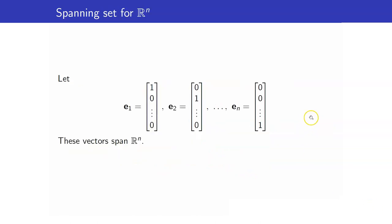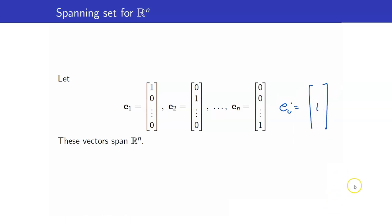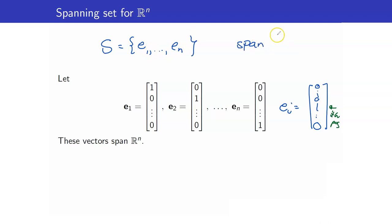Let us take a look at some examples of spanning sets. Let us consider the vector space Rn. Suppose that E1 is the column vector where 1 is in the first position and 0 elsewhere. For E2, you have 1 in the second position and 0 elsewhere. And so on — for En, you have 1 in the last position and 0 elsewhere. In general, Ei has 1 in the ith position and 0 everywhere else. If we let S equal {E1, ..., En}, this set spans the entire vector space Rn.